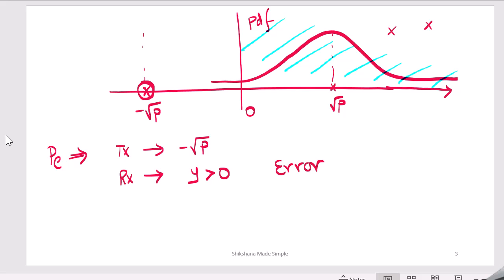So what is y? y is equal to x plus n. In this case y is equal to minus square root of P plus n because that is what you have transmitted. So this becomes minus square root of P plus n. If it falls in the positive quadrant then you are going to have the error, which means n is greater than square root of P.